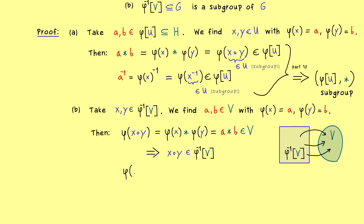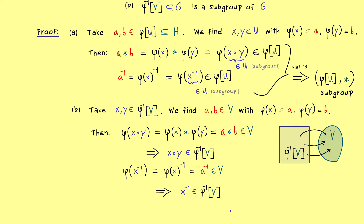Now we do the same for inverses. We get A⁻¹, and since A is in V the inverse is also in the subgroup V. So x⁻¹ lies in the preimage of V. Again, these two things are sufficient for having a subgroup, and there we have it — this is the whole general proof.